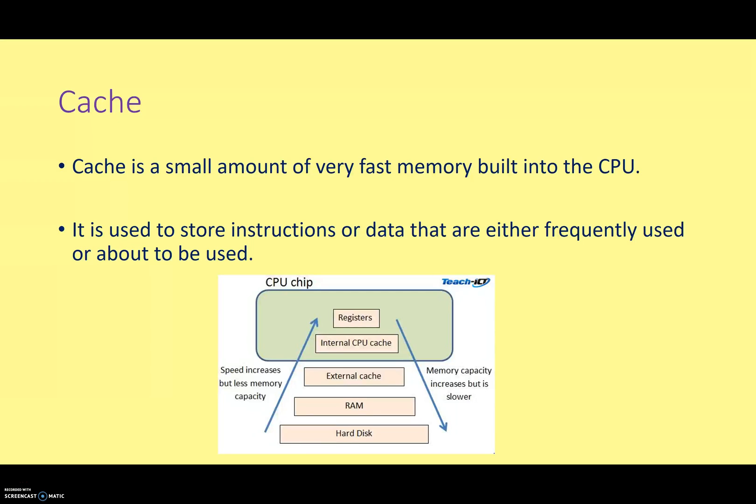You might be asking, well, if cache is so much faster, and cache is so much better than RAM, why don't we just do away with RAM, and just have lots and lots of cache? Let's have gigabytes of cache instead of megabytes. And the reason we don't is basically cost.